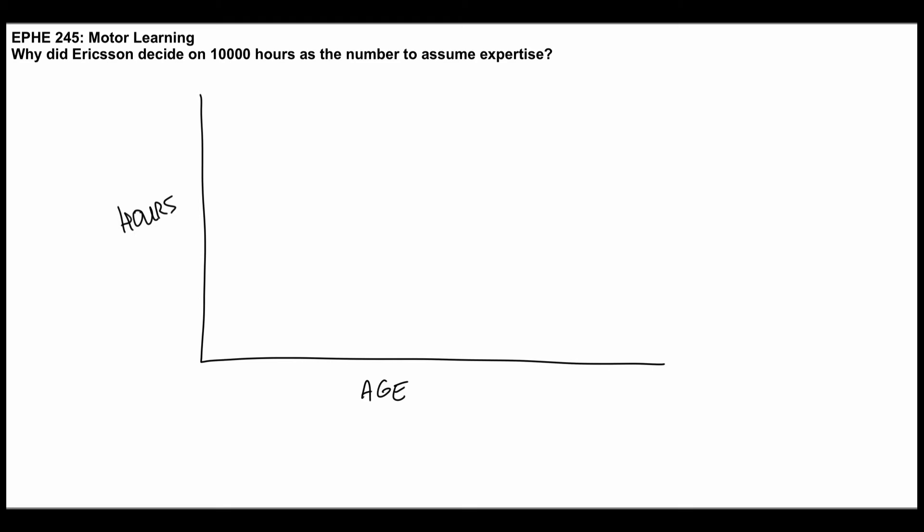Basically, he started from about age 4 and 5 here, and he went to about age 20 over here. And what he found in terms of hours spent practicing was the following. He had three key groups.